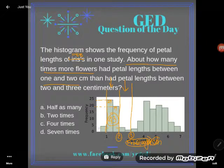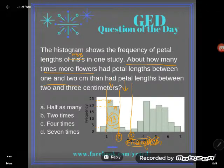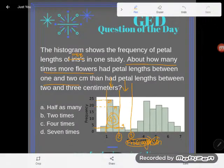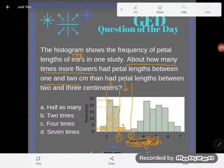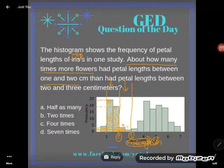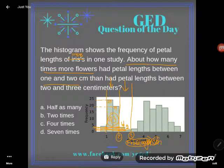Now let's look at the two-to-three centimeter category. That one looks like about three or four — it's hard to tell without a straight line. I'm going to call it four, and this one looks like about two. My lines aren't super straight, but I'm going with four and two — so about six flowers in that category.